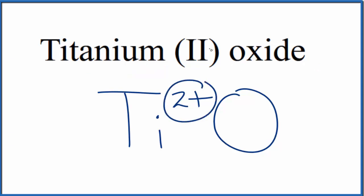We know that titanium is 2 plus because of the Roman numeral. Oxygen, that's in group 16, sometimes called 6A, it's always 2 minus.